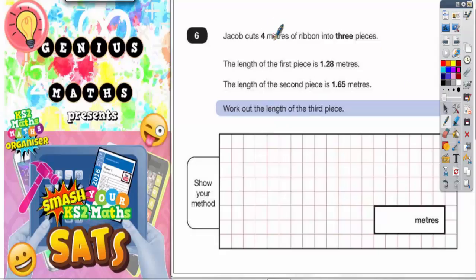Question 6. Jacob cuts 4 meters of ribbon into 3 pieces. The length of the first piece is 1.28 meters. The length of the second piece is 1.65 meters. Work out the length of the third piece.